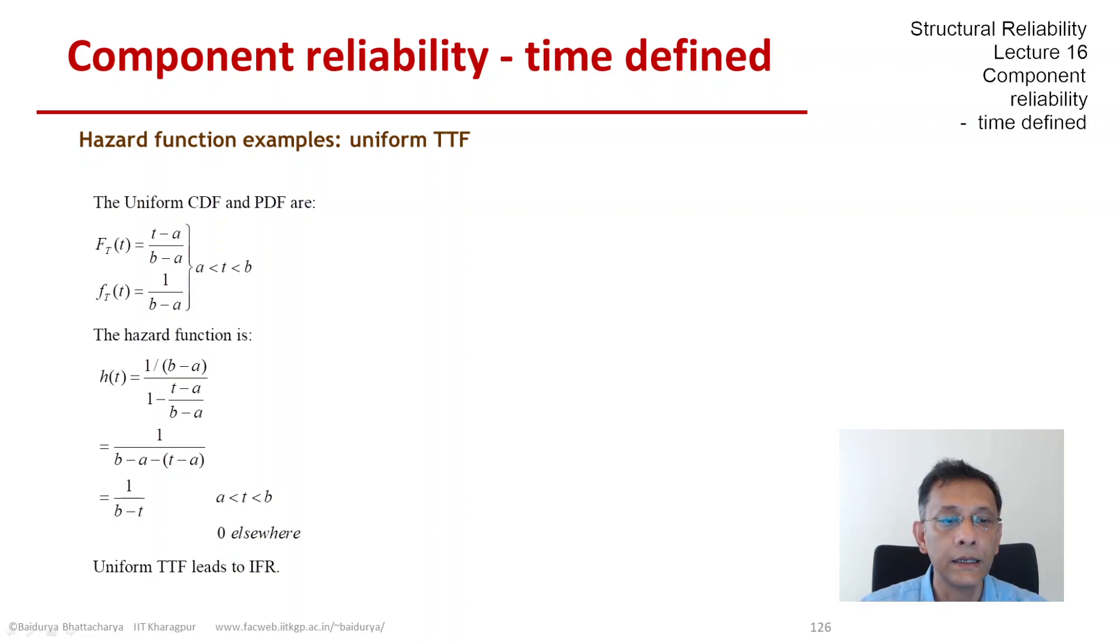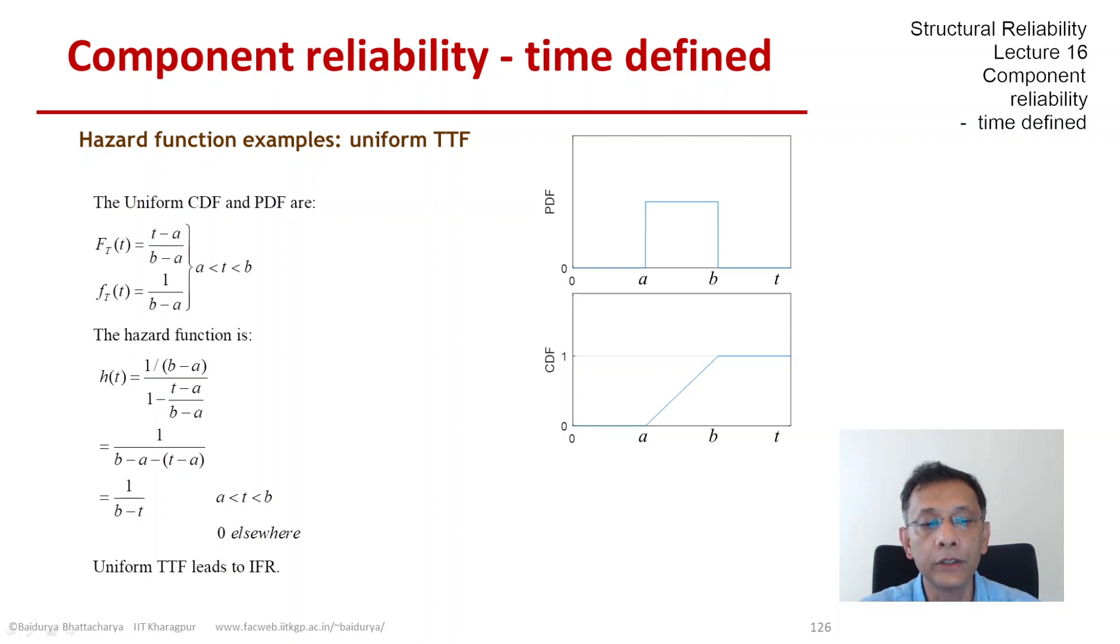And this is what the PDF looks like. As I said, it's a rectangle. And the CDF is a linear function between a and b, rises from 0 to 1. And the hazard function now goes up asymptotically to infinity at b.